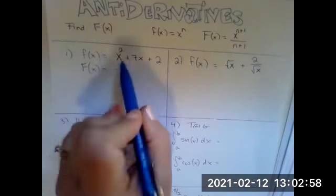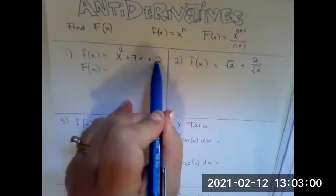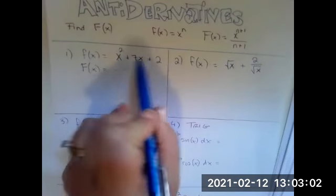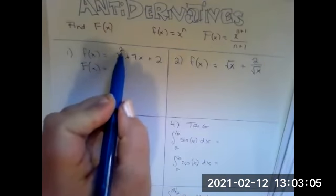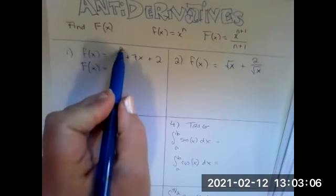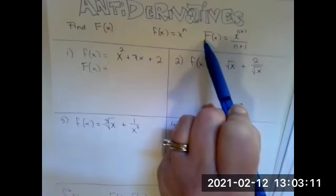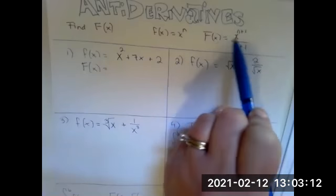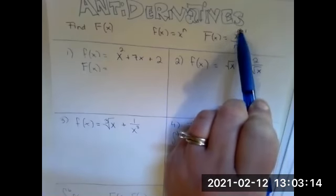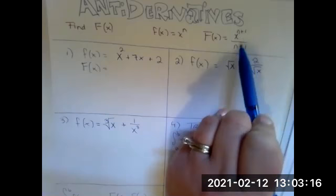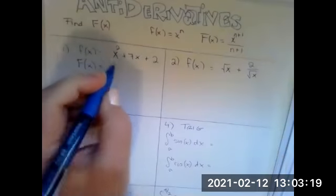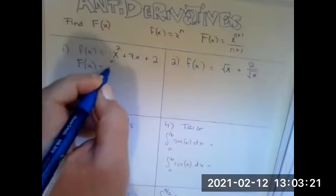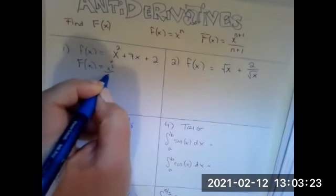We can treat each term separately because of the sum rule that we talked about with our properties. So X to the power of two — that would be like X to the N where N is two. The antiderivative of X squared would be X to the two plus one, which is X to the three, over N plus one, which is three. So first we get X cubed over three.